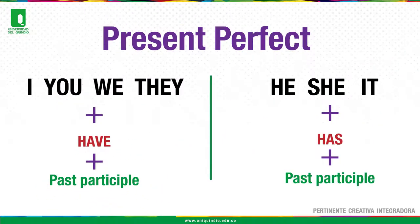Affirmative form: Subjects I, you, we, they plus auxiliary 'have' plus the past participle of the verb. For third persons — subjects he, she, it — plus auxiliary 'has' plus the past participle of the verb.